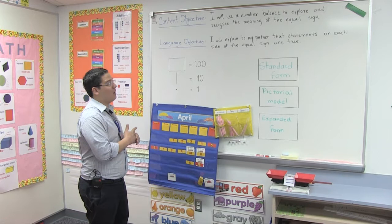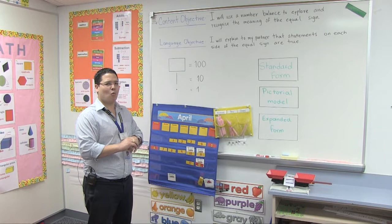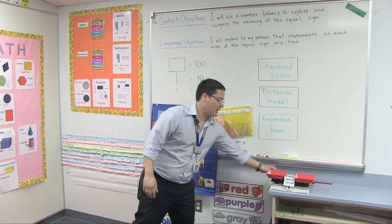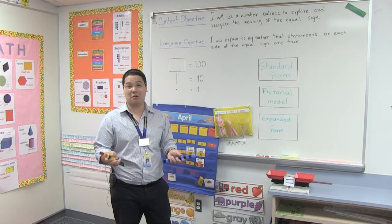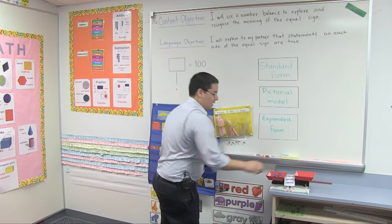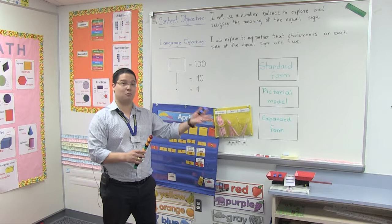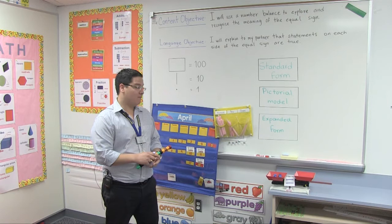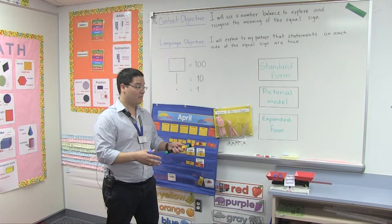Since they know how to add and subtract, but sometimes they don't know exactly what the equal sign means, I brought some number balances and they can play with unifix cubes to make a number sentence. Let's say if they are going to say that three plus five equals eight, they can put in one part of the balance three unifix cubes and then five more. If the balance is on level, it means that the equation is correct.